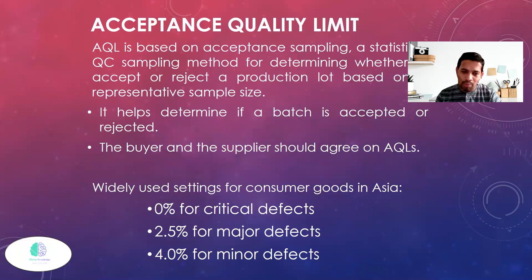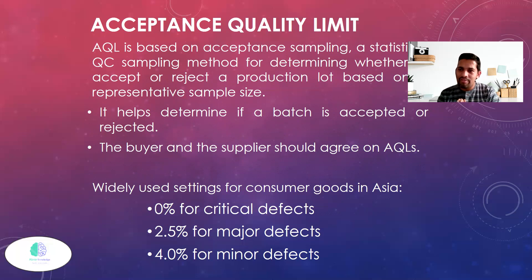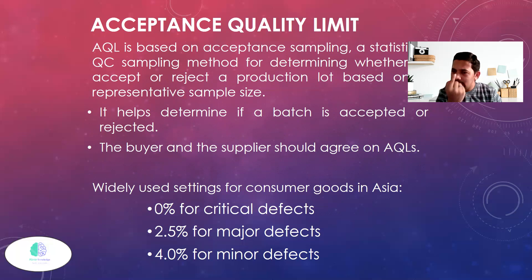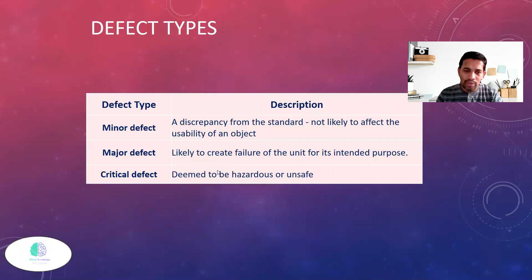Remember: zero percentage critical defects. Even when inspecting 500 units out of 40,000 — if a single unit has a critical defect, we reject everything and do 100% inspection.